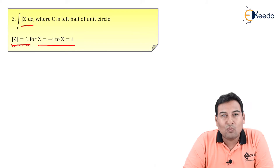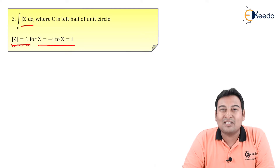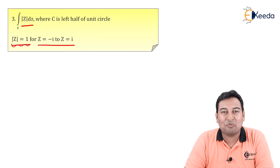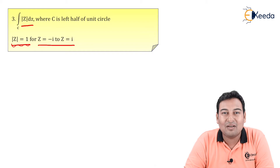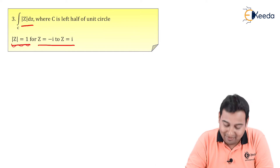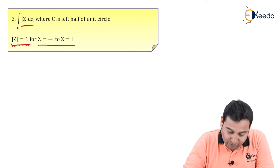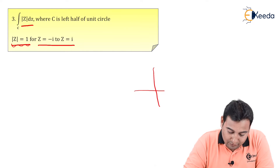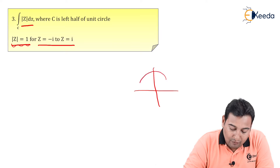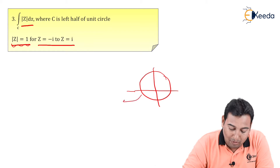|z| = 1 — we have already discussed this a number of times. |z| = 1 means a circle with radius 1, so let me draw the circle with radius 1.